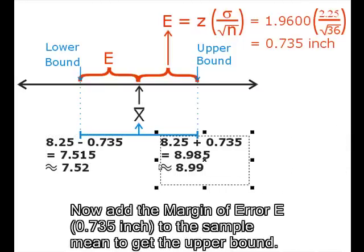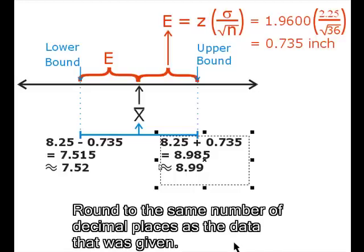Now add the margin of error E, 0.735, to the sample mean to get the upper bound. Round to the same number of decimal places as the data that was given.